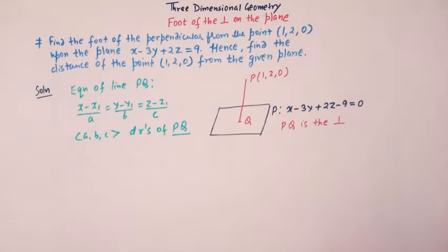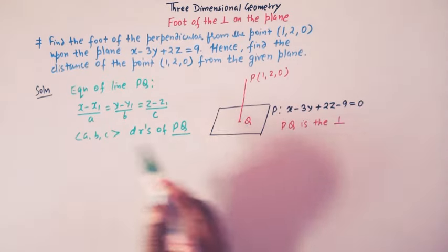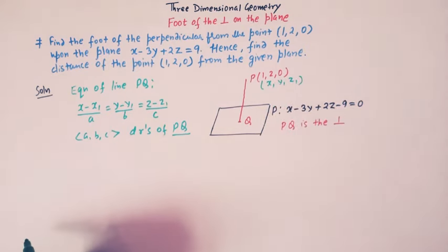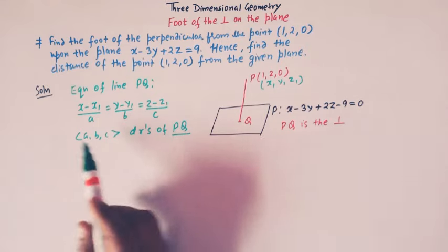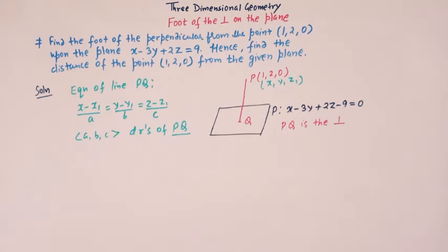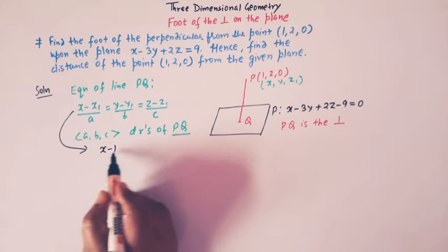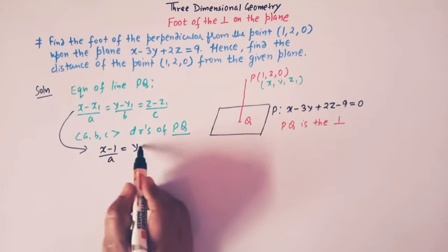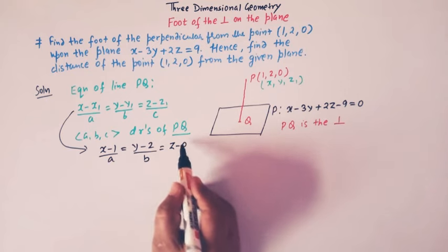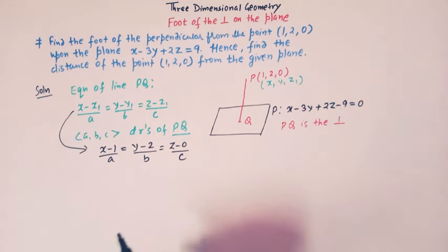So A, B, C are the direction ratios of the line PQ, and (x₁, y₁, z₁) is the point through which this line PQ passes. Now here we have the point (x₁, y₁, z₁) as (1, 2, 0), so x₁ is 1, y₁ is 2, and z₁ is 0.